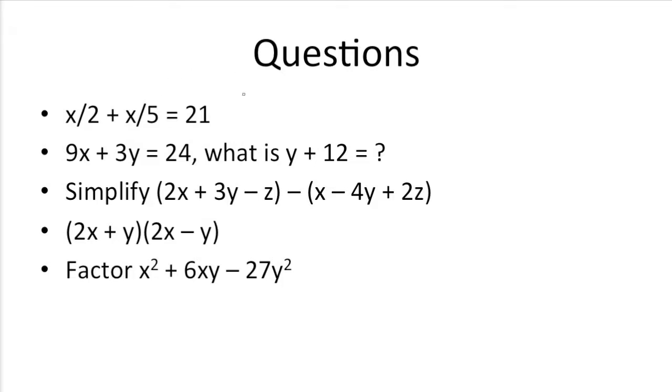First up, we have x/2 + x/5 = 21. To solve for x, what we need to do is first get rid of these fractions. So the way to do that would be to find a common denominator between x/2 and x/5.